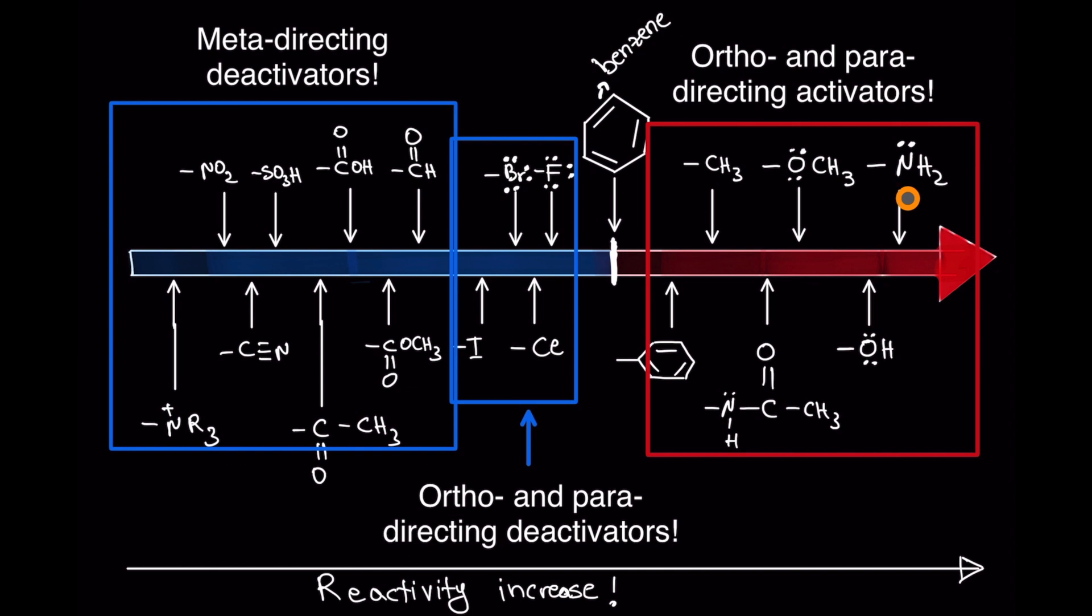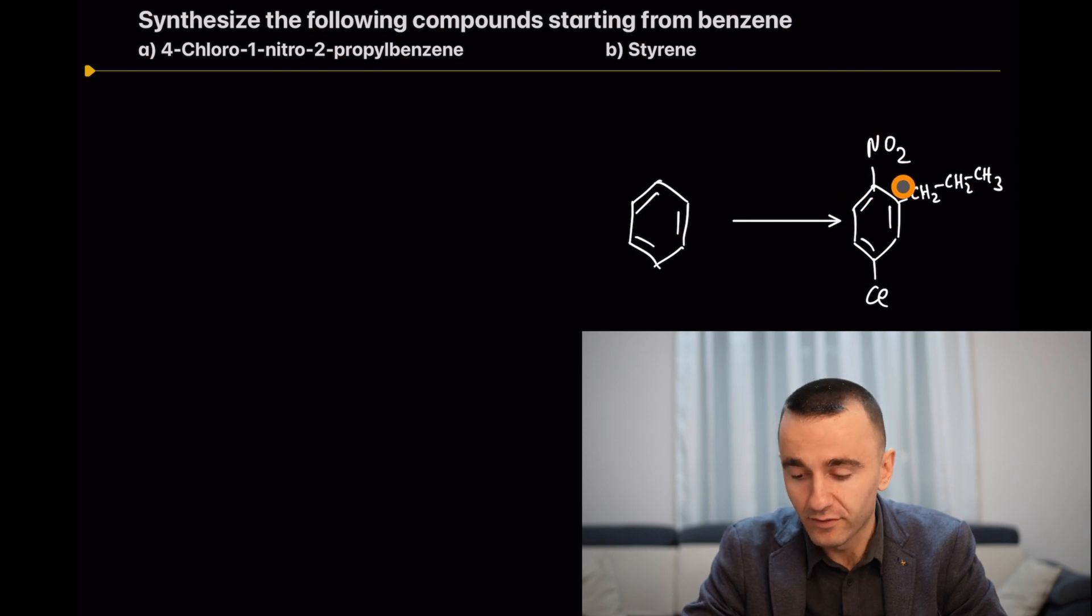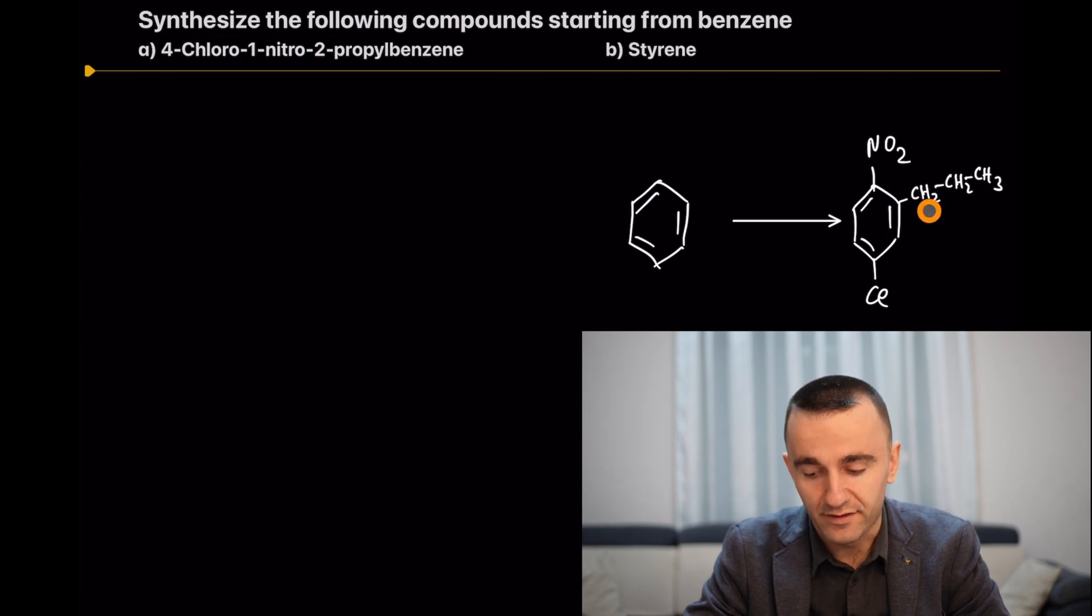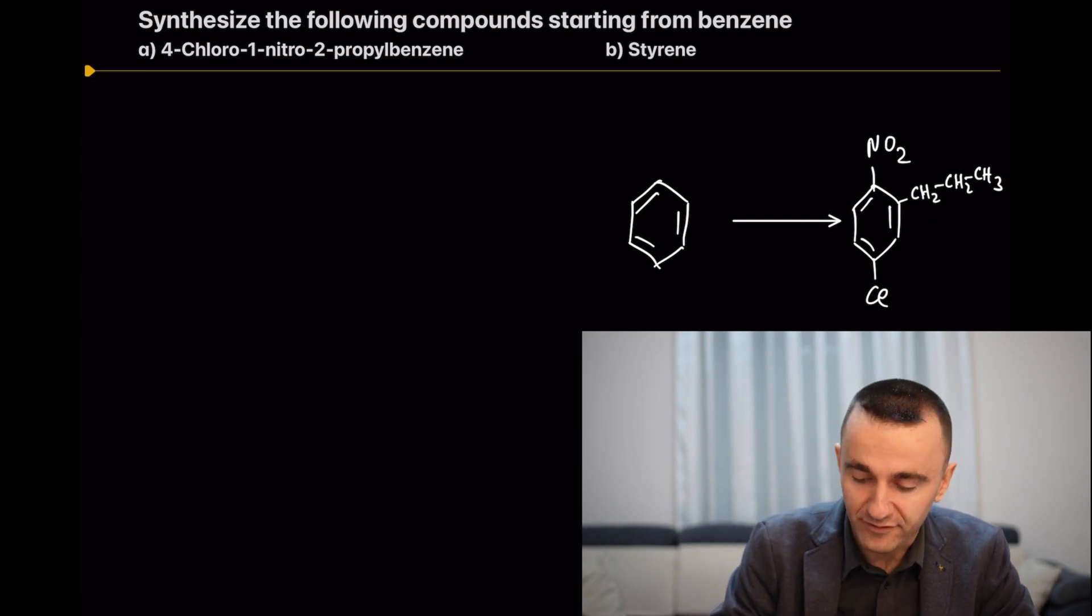Which group do you think we're going to remove first? If we remove the nitro group, what remains is a propyl group in ortho and para position and the chlorine group in ortho and para position. It fits perfectly—those two groups reinforce each other. So we're going to remove the nitro group.